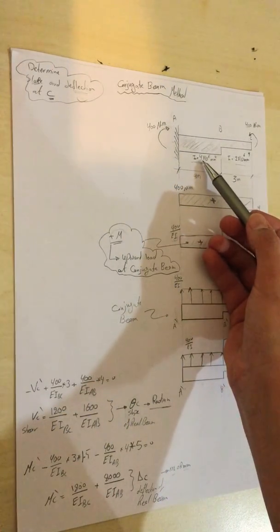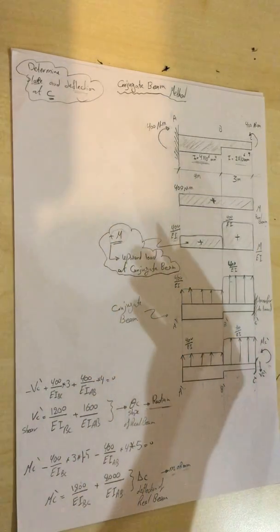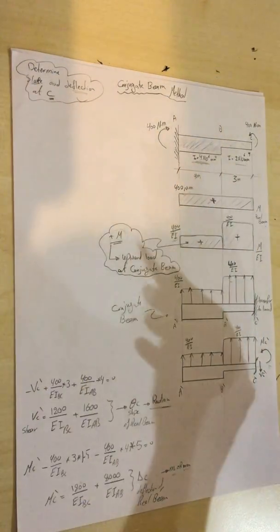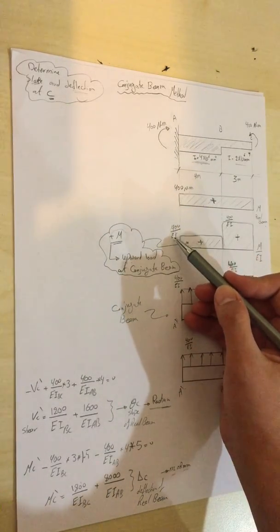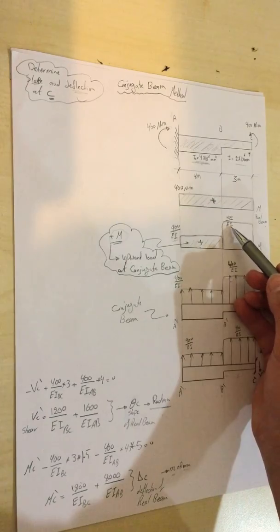It has more resistance to the applied moment or to bending moment. So it will be 400 divided by EI here, and 400 divided by EI here. The numbers are the same, but the moment of inertia will make it less in here.